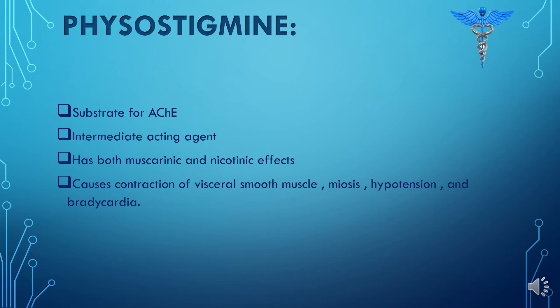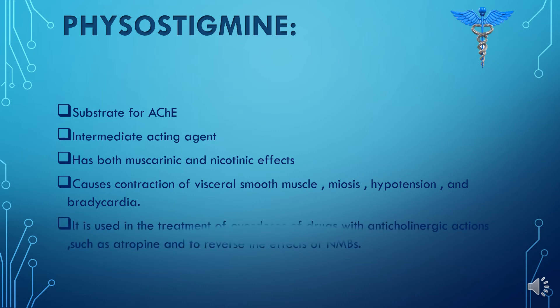When physostigmine is administered, it causes contraction of visceral smooth muscle, miosis — constriction of the pupil — hypotension, and bradycardia, which is a decreased heart rate.